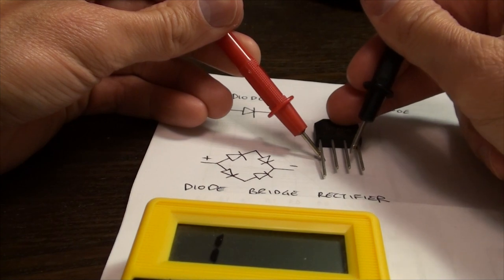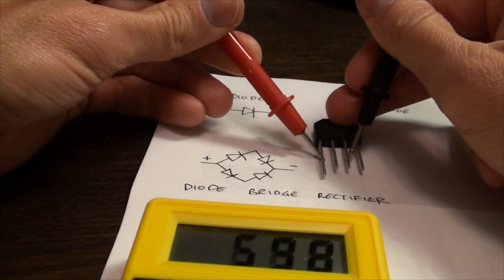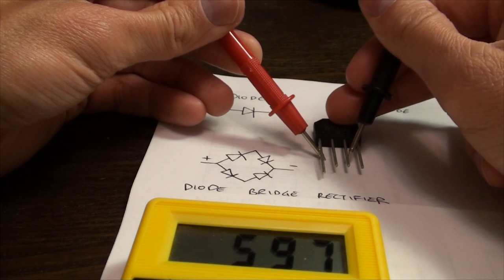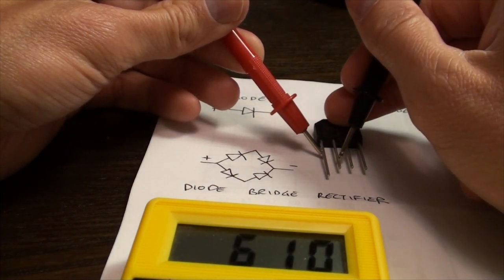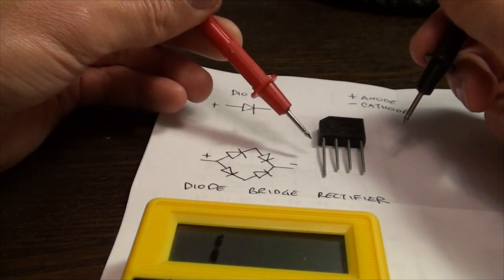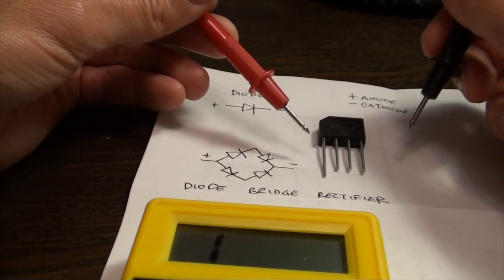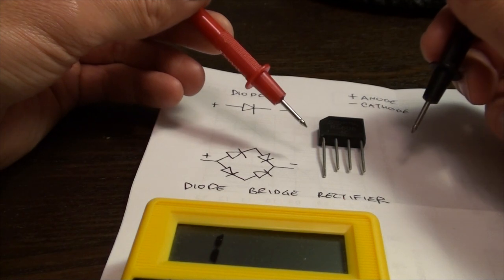If you try a middle leg, it will give you about half of the reading that you get on the outside, and that should be about the same with each leg. Those readings are consistent with a working diode bridge rectifier.